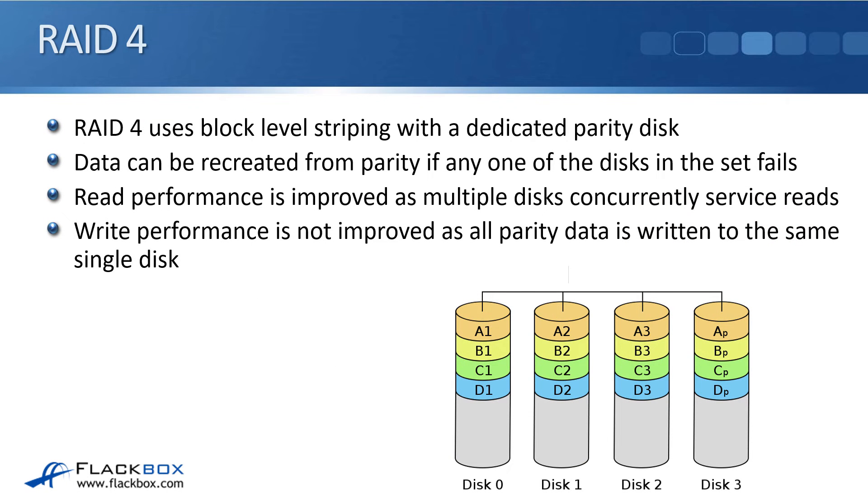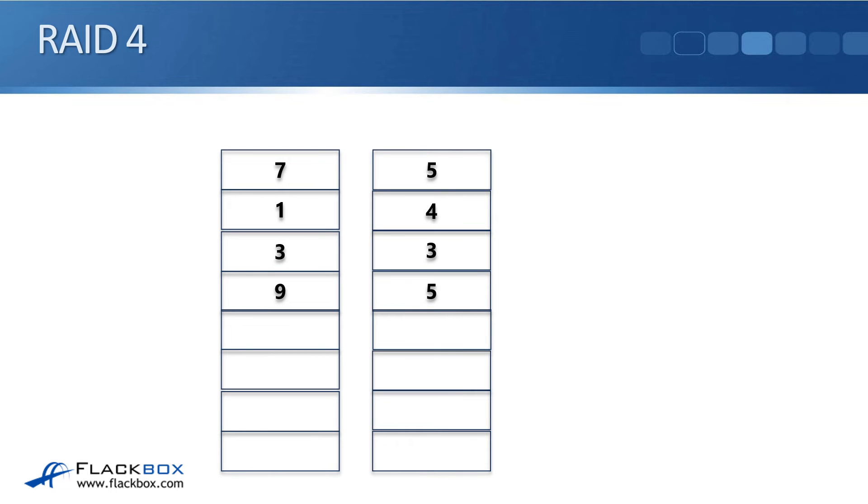Next RAID level is RAID 4. That uses block level striping with a dedicated parity disk. So this is going to give us both performance and redundancy. Data can be recreated from parity if any one of the disks in the set fails. Read performance is improved as multiple disks concurrently service reads. Write performance is not improved with RAID 4 as all parity data is written to the same single disk.